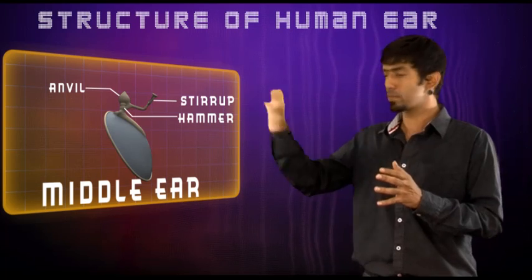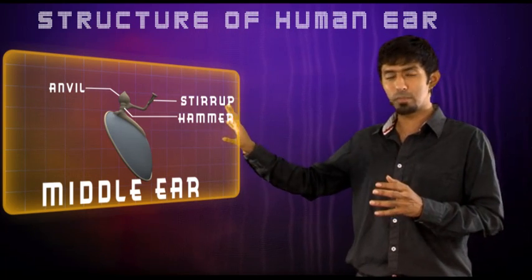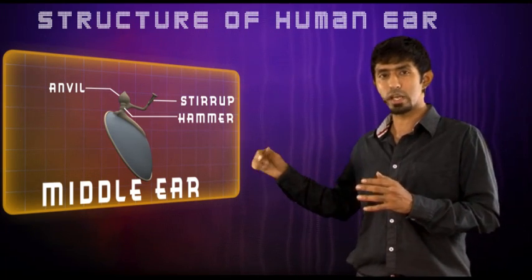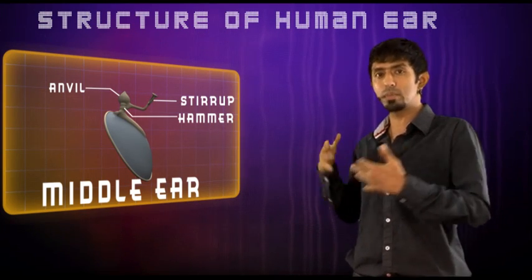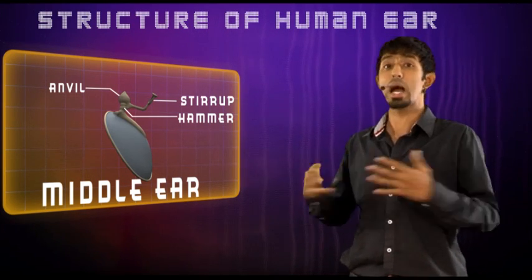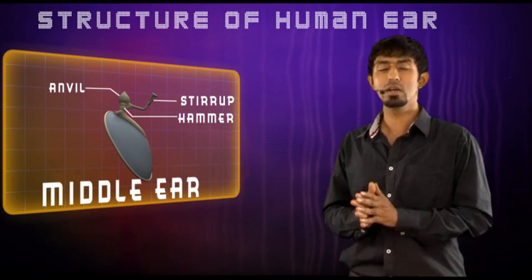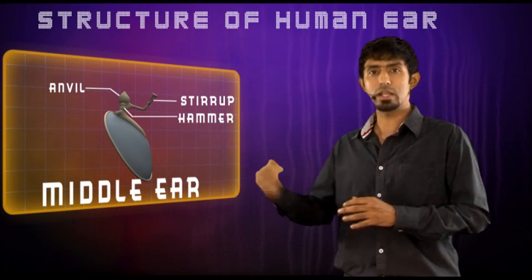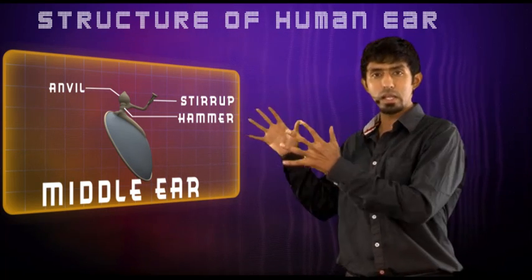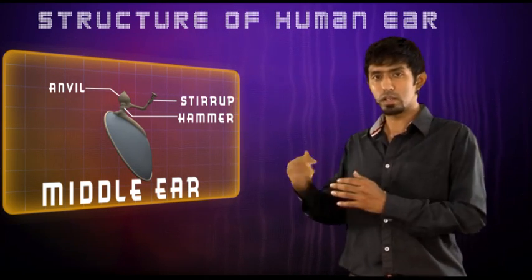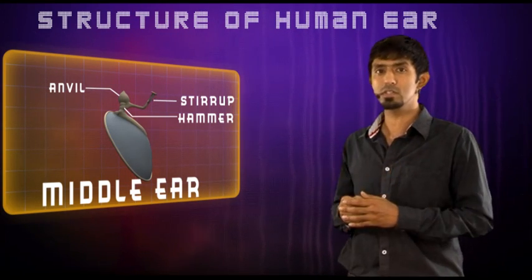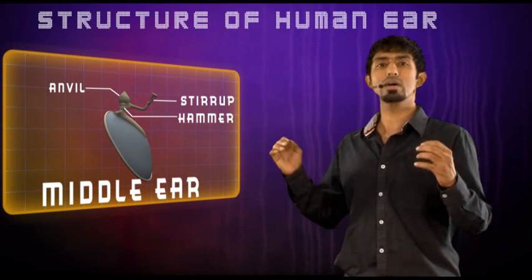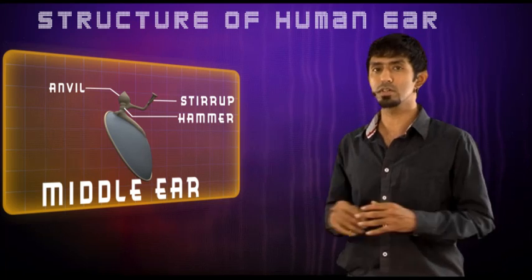This amplification happens in what we call the middle ear. So from the outer ear — the pinna — the sound goes inside, and these three bones amplify the sound. The outer ear's purpose is to collect and direct the sound inward; the middle ear's purpose is to amplify the sound.